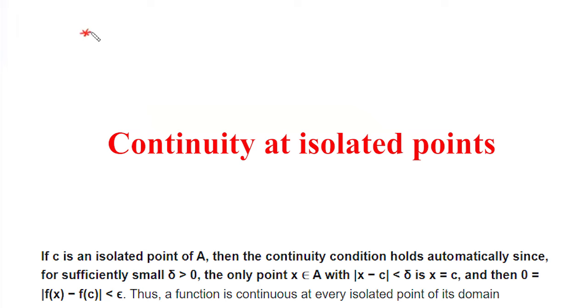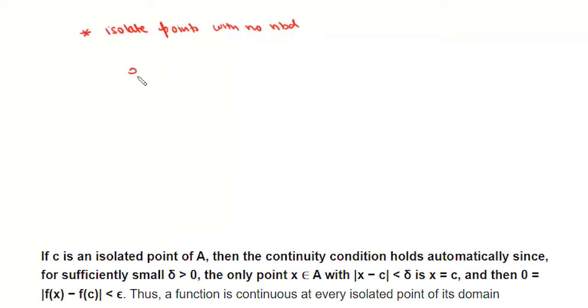Now there will be some functions which will contain isolated points with no neighborhood. Say for example we have this function f(x) which is defined by this: square root of 1 minus x plus square root of x minus 1.